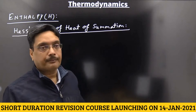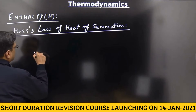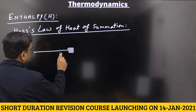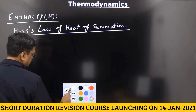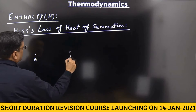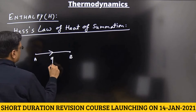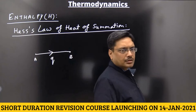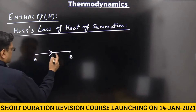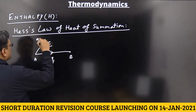Hess's Law of heat of summation. Supposing that A is converted into B — in the formation of A to B, Q heat is released or absorbed. Q is the amount of heat released or absorbed. This is one path.